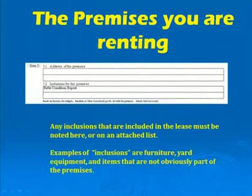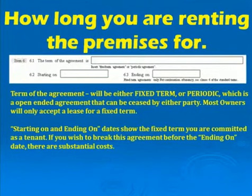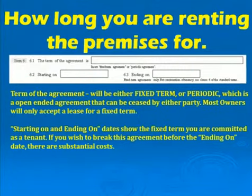The premises you are renting — any inclusions that are included in the lease must be noted here or on an attached inventory list. Examples of inclusions are furniture, yard equipment, and items that are not obviously part of the premises. The term of this agreement specifies how long you are renting for, and it can either be a fixed term for a period of months, or periodic — an open-ended agreement that can be ceased by either party with appropriate notice. Most owners will only accept the lease for a fixed term.